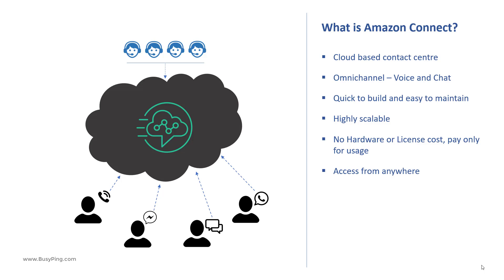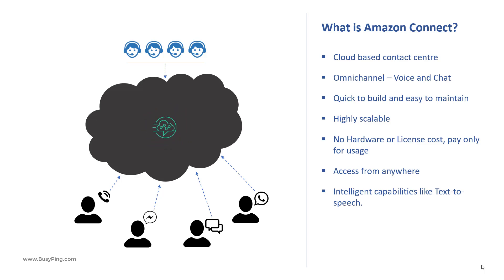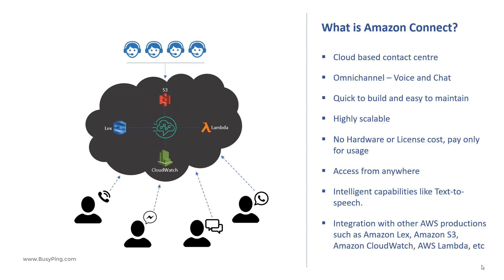In addition to the regular contact center features like IVR, queues, automatic call distribution, call recording, etc., Amazon Connect also has a built-in text-to-speech function and it can seamlessly integrate with other AWS products such as AWS Lambda and Amazon Lex.